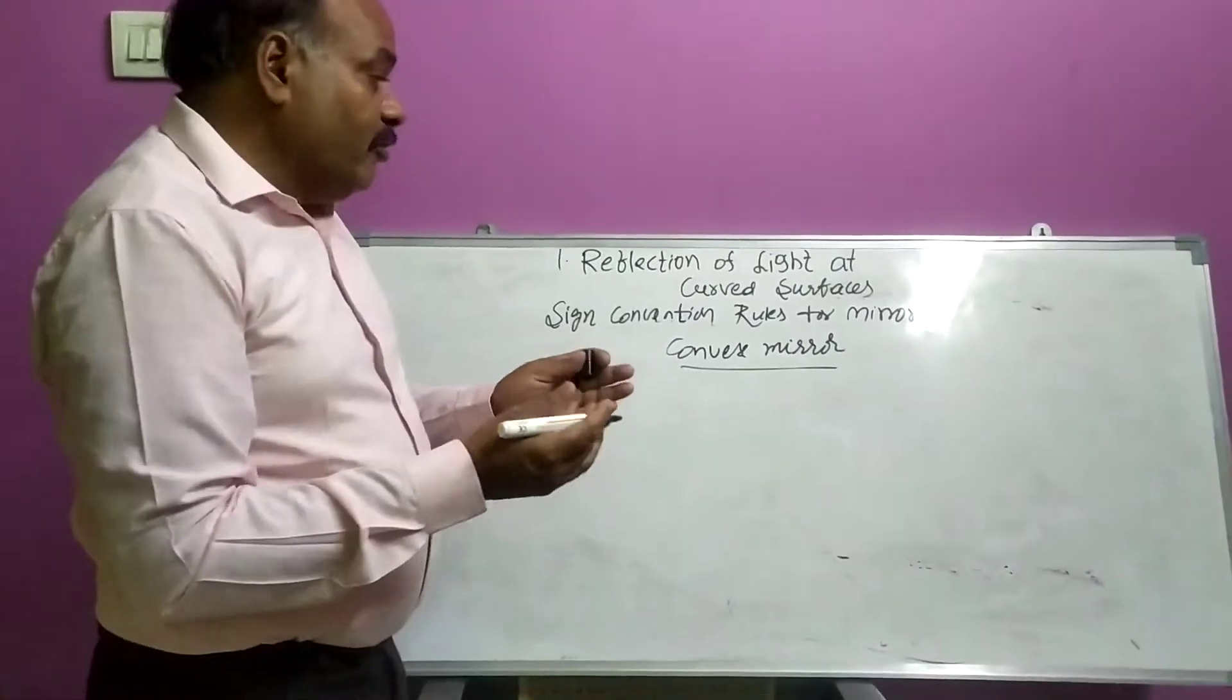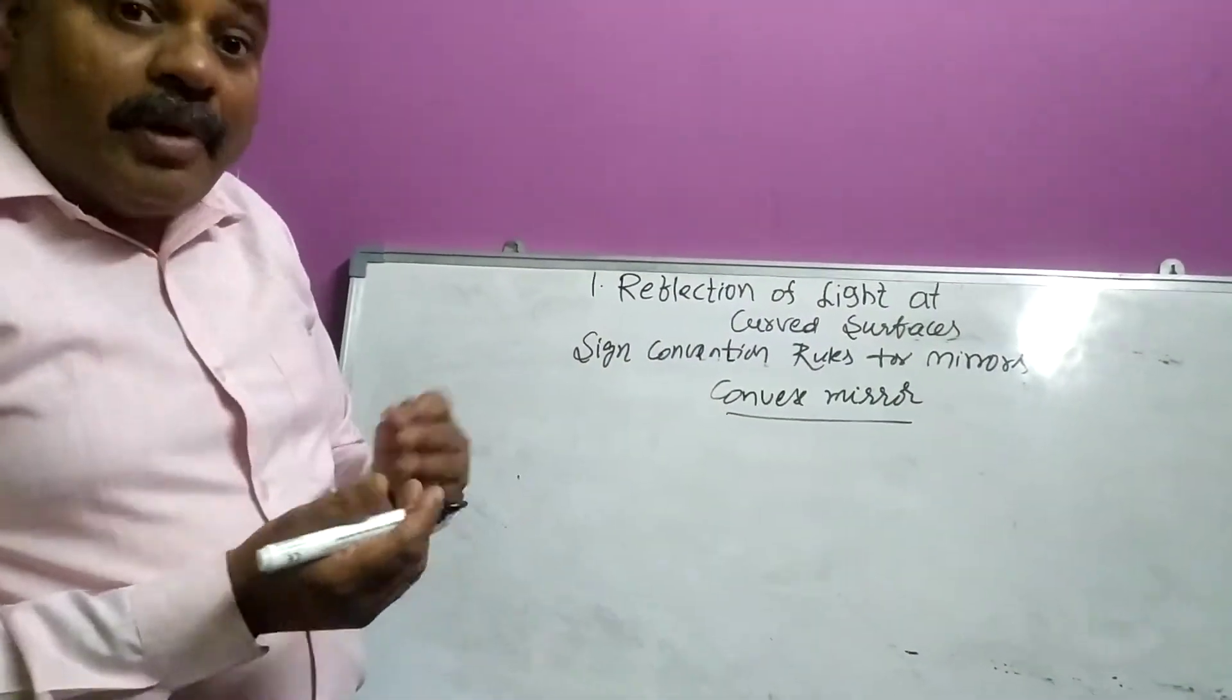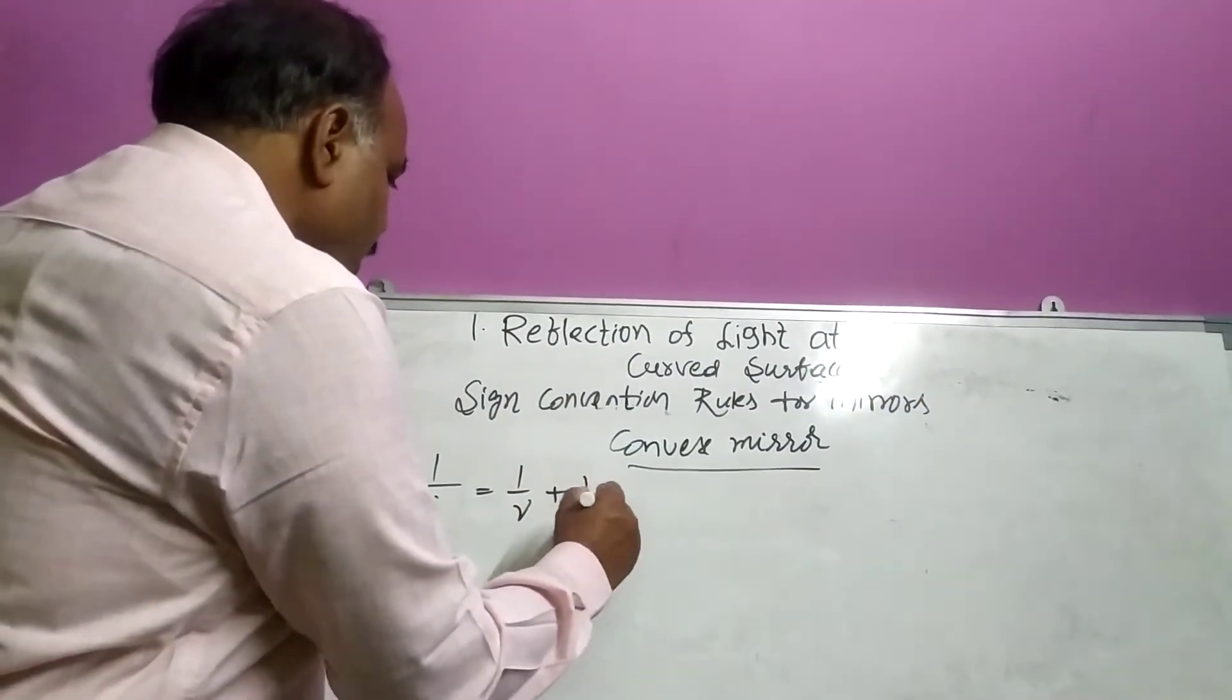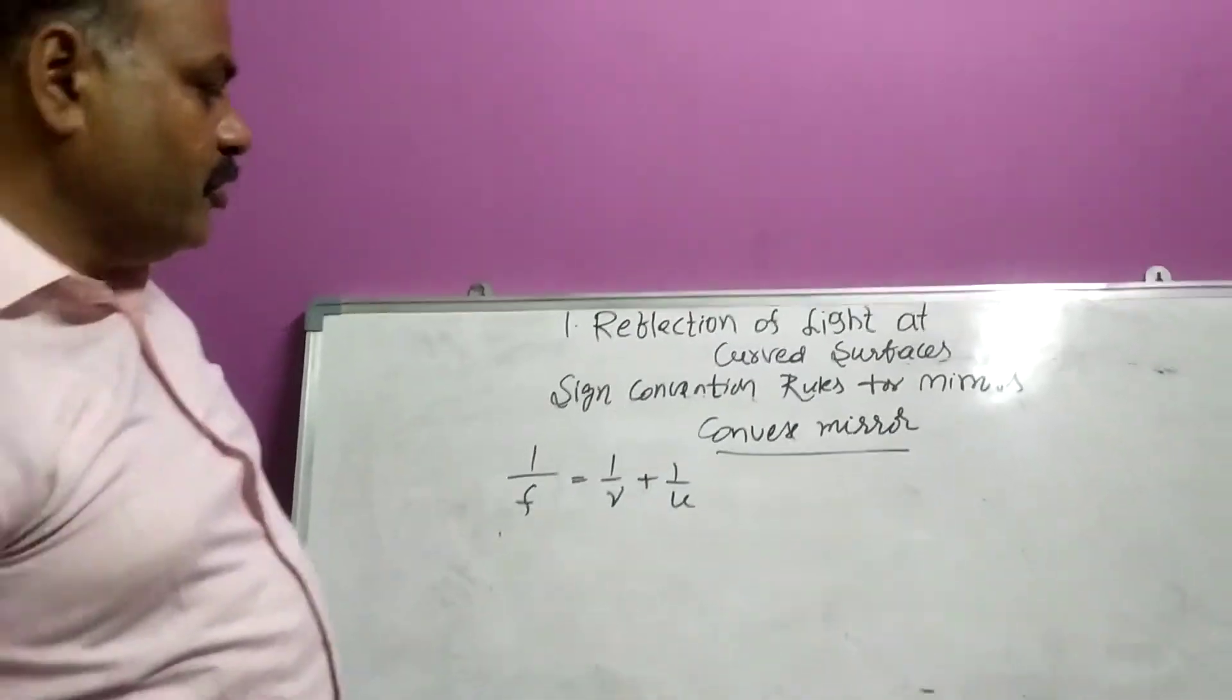Look here, we all know what is the mirror formula. Mirror formula is 1/F = 1/V + 1/U. We know this, my dear students.